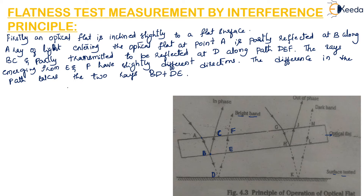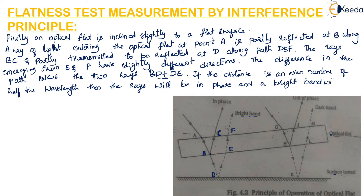If this path difference BD plus DE is an even number of half-wavelengths, then the rays will be in phase and a bright band can be seen. At another position G, if the path difference along H, K, and L is an odd number of half-wavelengths, then a dark band will emerge in direction M.